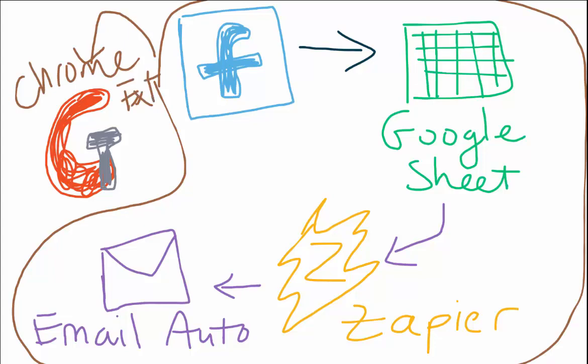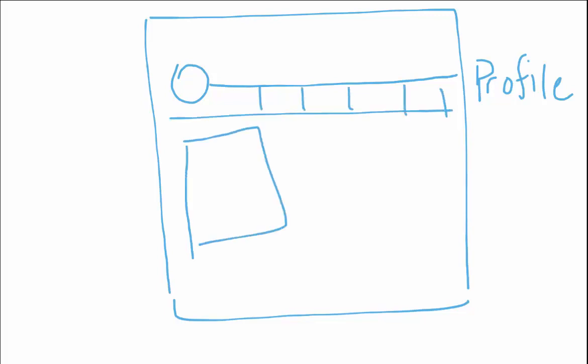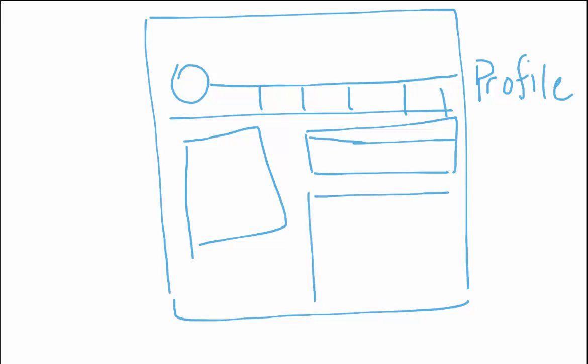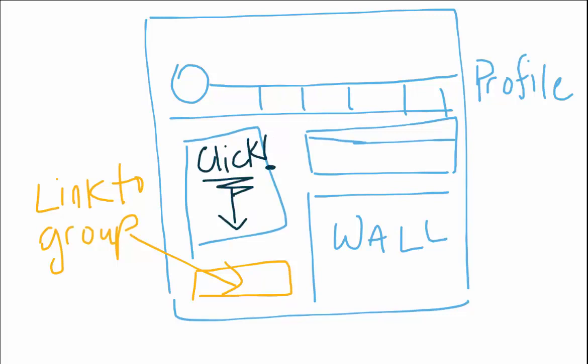Let's say that you have a Facebook profile — this is my drawing of a Facebook profile. You have a wall, and usually you can have a link to whatever your social accounts. You're going to put your link to your group there, and then above it you can have one feature picture or many, but the feature picture will say 'hey, click the link.'